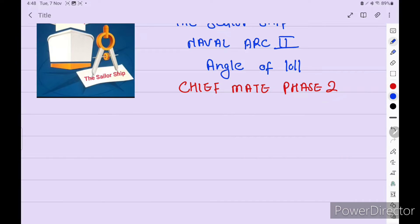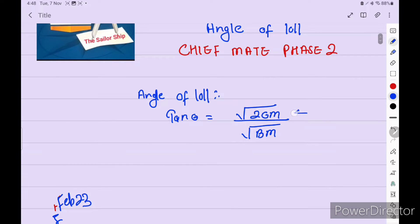The formula, first we discuss formula. Angle of loll formula is tan theta is equal to square root of 2GM upon BM. Okay, this is formula. How if we get GM? We know that KM minus KG is equal to GM. Or BM is equal to KM minus KB is equal to BM.